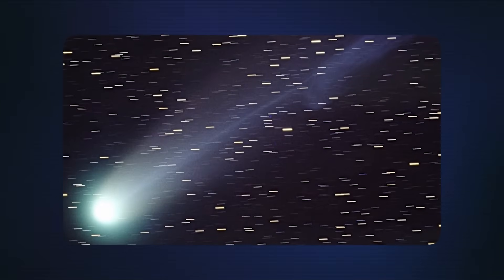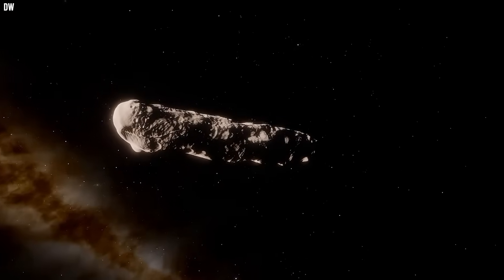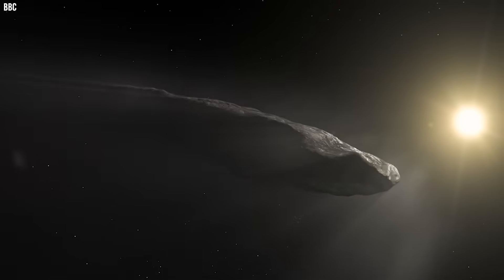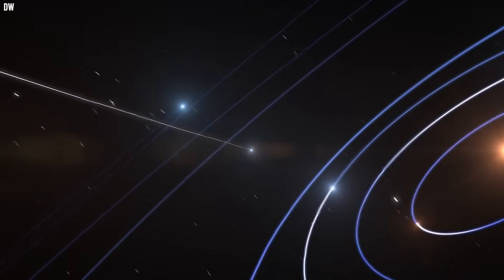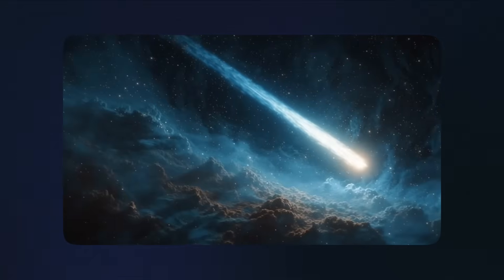Its tail wasn't spreading out and getting fuzzy like normal comet tails do. Instead, it formed a perfectly straight line, millions of kilometers long, as if someone had used a cosmic ruler to draw it across the darkness.